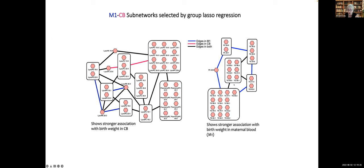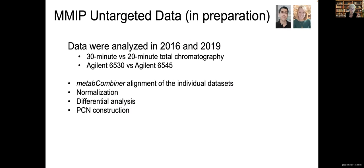From the group LASSO regression we identified two subnetworks with stronger association with birth weight in cord blood. Perhaps not surprisingly, one of them contains the phospholipids I pointed out in the heat map. In contrast, a triglyceride-primarily subnetwork shows stronger association with birth weight in maternal blood. This represents collapsed nodes where we grouped lysophospholipids into a singular node, because they were strongly correlated. This is a feature of the program — it allows you to select the level for node collapsing.